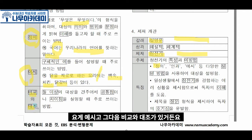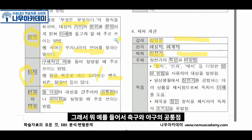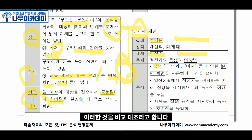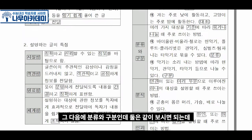그 다음 비교와 대조가 있거든요. 비교는 공통점이고 대조는 차이점입니다. 예를 들어서 축구와 야구의 공통점은 공으로 한다는 것이고, 축구와 야구의 차이점도 있습니다. 이러한 것을 비교, 대조라고 합니다.